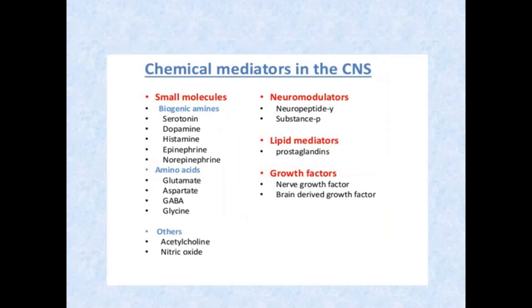You can also classify neurotransmitters based on chemical nature. Small molecules include biogenic amines such as serotonin and dopamine. Amino acid neurotransmitters include glutamate, GABA, and glycine. This chart is important for MCQs — for example, 'which of the following neurotransmitters are biogenic amines?' The answer is serotonin.